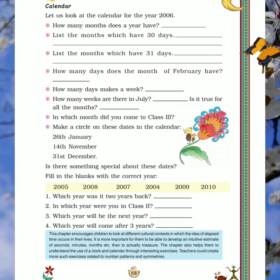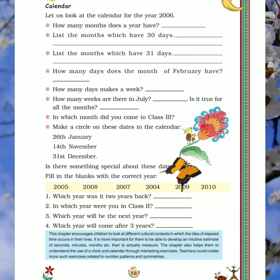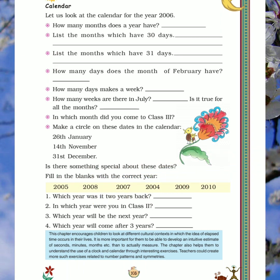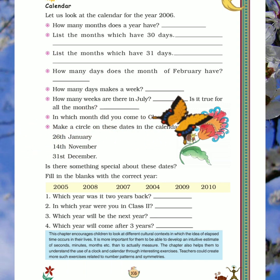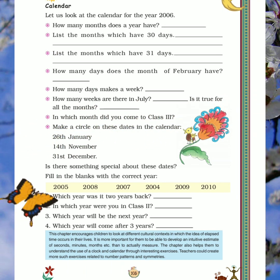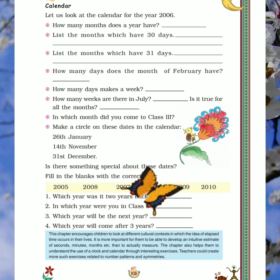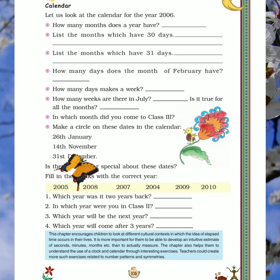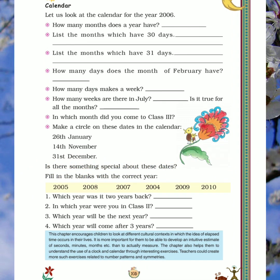Now coming to page number 103. Let us look at the calendar for the year 2006. Is page mein jo bhi questions diye hain, unka answer aapko page number 102 par jo 2006 ka calendar diya tha usko dekh kar karna hai. First question: How many months does a year have? Ek saal mein kitne months hote hain? 12 months.